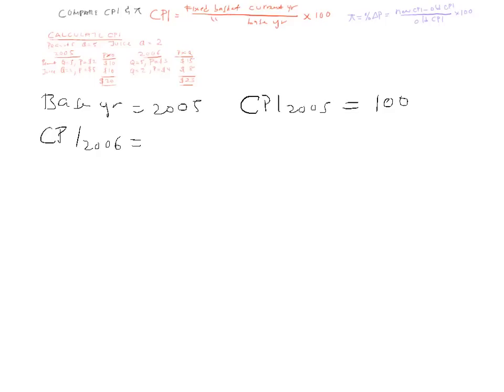We're going to use this formula over here. Current year is 2006, base year is 2005. So the fixed basket of the current year 2006 is $23, that's the value, divided by the base year $20, multiplied by 100. 115. CPI in the year 2006 is 115.